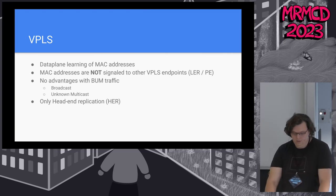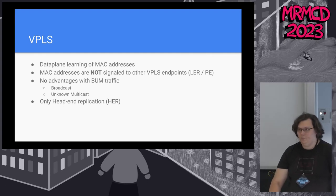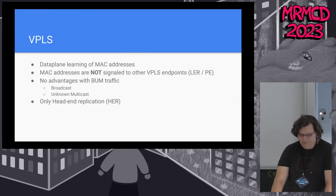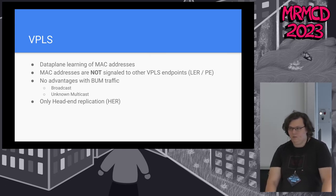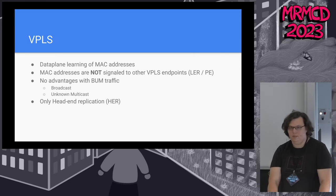VPLS is the next step after using plain switches. Instead of data plane learning of MAC addresses, MAC addresses are not signaled to the other VPLS nodes, so the other nodes have to actually learn which MAC address is where. I don't have any advantages in broadcast or multicast traffic, and all traffic is sent to all other VPLS nodes from the source node when multicast or broadcast traffic comes in. So I have a scaling and attack vector since I have to replicate all traffic, which can also fill my port up.